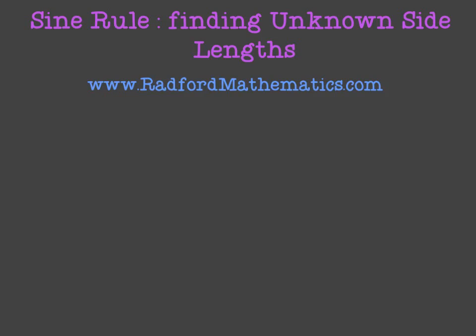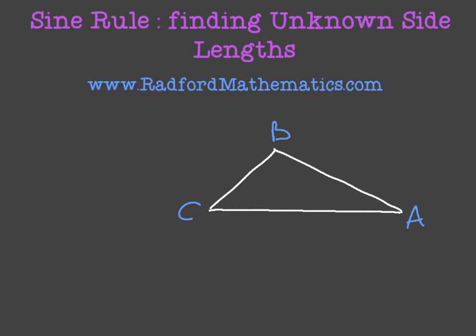Let's say we're given a generic triangle. We'll label each of its angles at the vertices, so that will be A, capital B, and capital C. And the side lengths — we label them with the lowercase letter of the angle they're opposite to. So the side length opposite angle A will be lowercase a, the side length opposite angle B will be lowercase b, and the side length opposite angle C will be lowercase c.